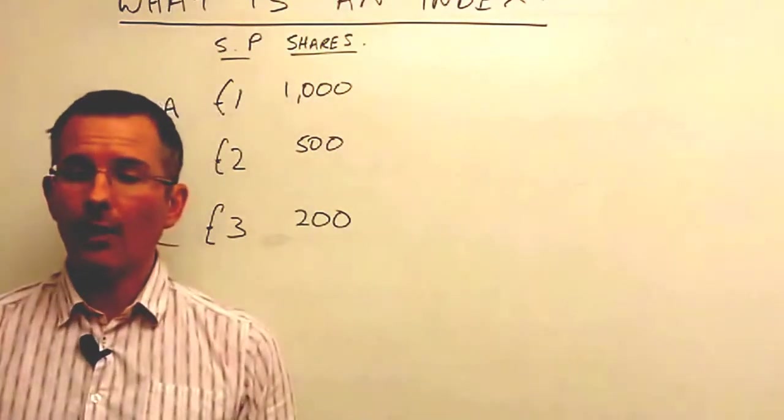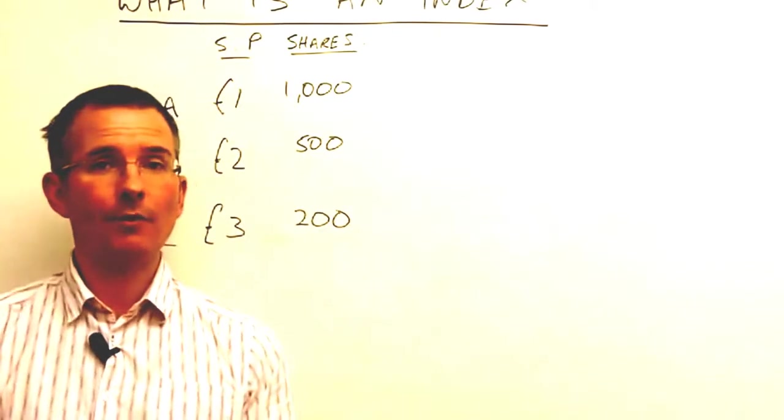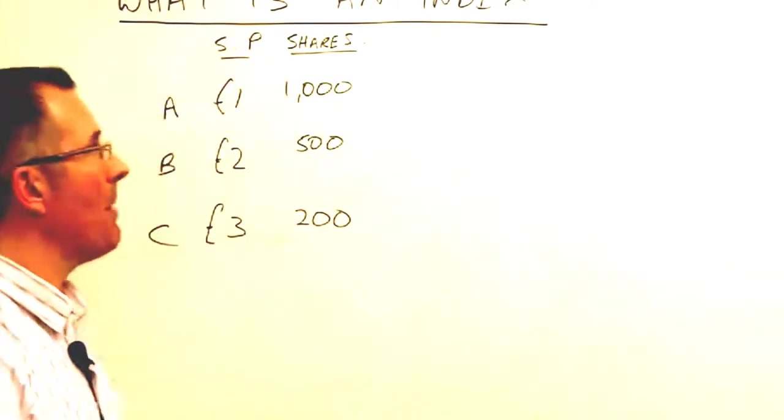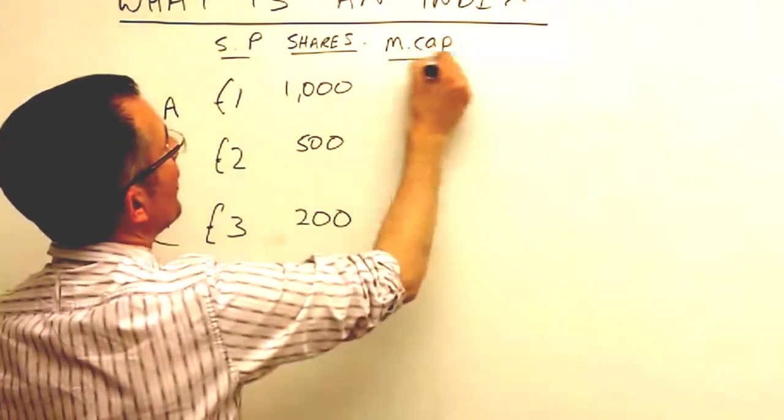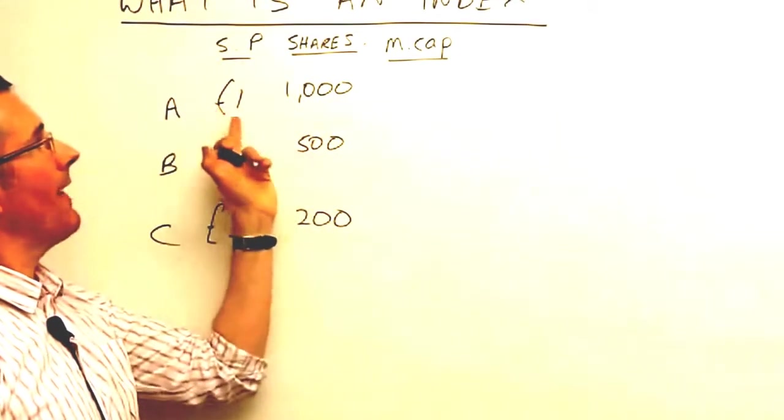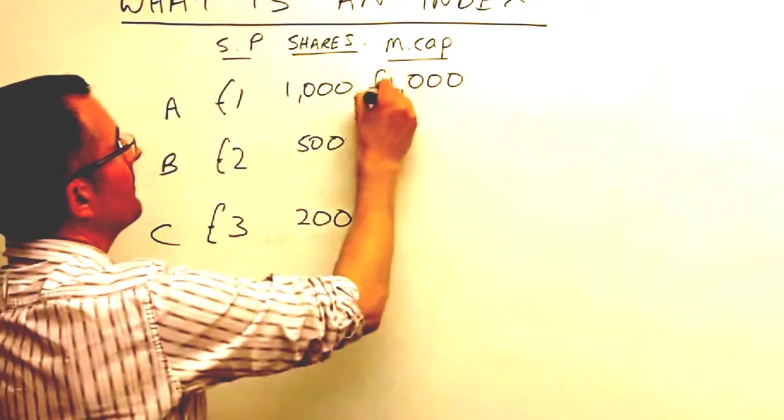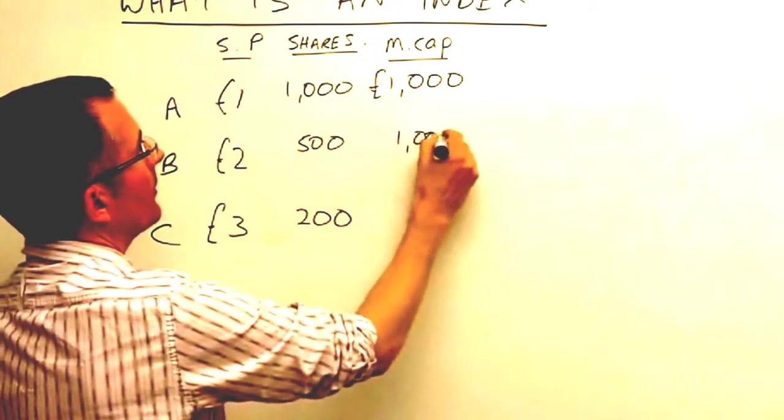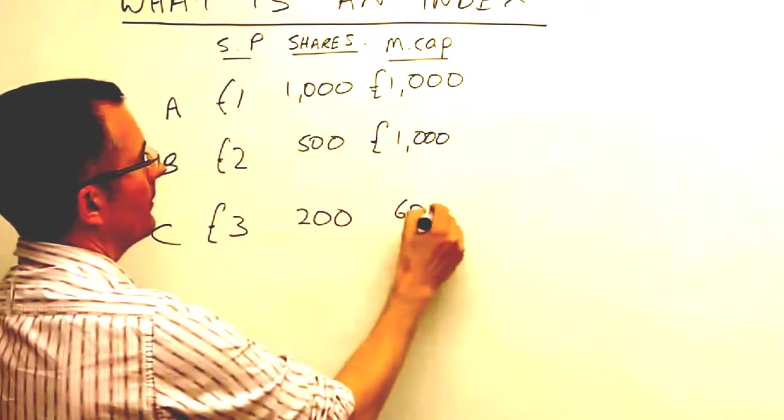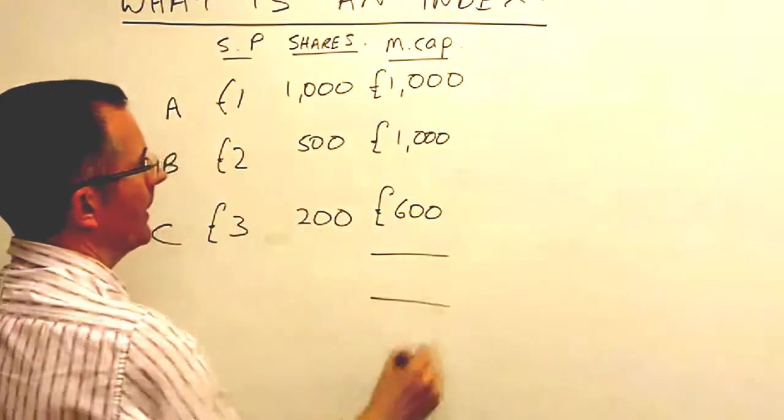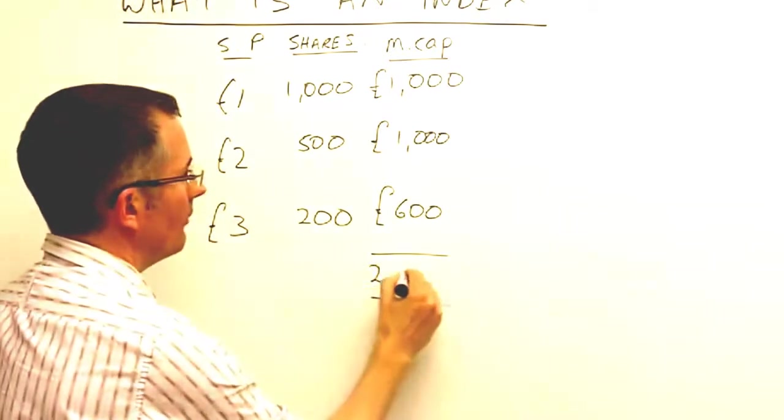From there, we could work out what's called a market capitalisation. We could take the share price, multiply by the number of shares they've issued, and are out there trading, and come up with a market cap. So let's do that, and then see where we've got to. So market capitalisation, multiplying that by that, is £1,000 for company A, also £1,000 for company B, and £600 for company C. So the total market capitalisation of these three companies, at the moment, £2,600.